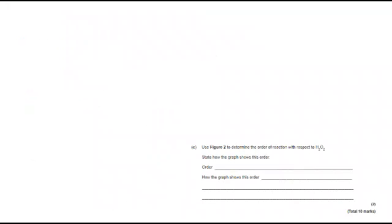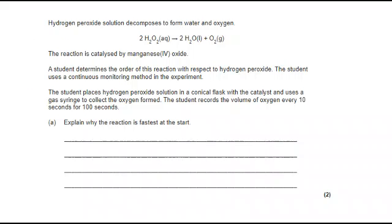So let's start to take a look through the answers. We've got hydrogen peroxide breaking down into water and oxygen catalyzed by manganese 4 oxide. Student determining the order of reaction with respect to H2O2 using a continuous monitoring method in the experiment. So the student placed the H2O2 in a conical flask with the catalyst and using a gas syringe collected the oxygen formed, recording the volume of oxygen every 10 seconds for 100 seconds. Why would the reaction be fastest at the start?